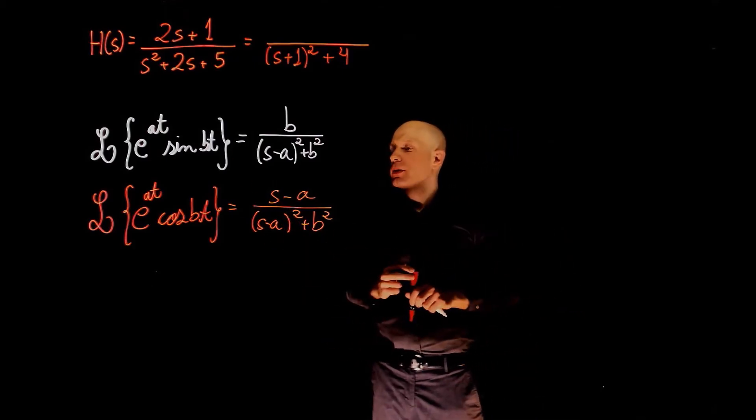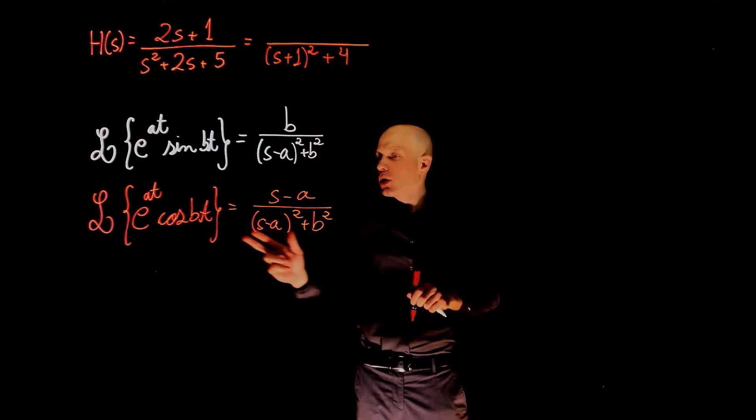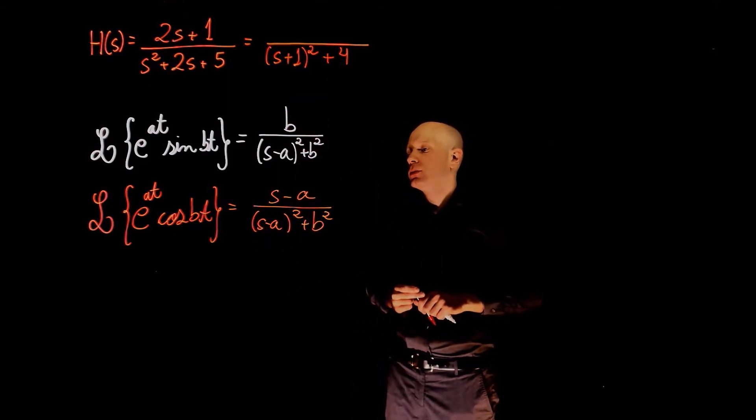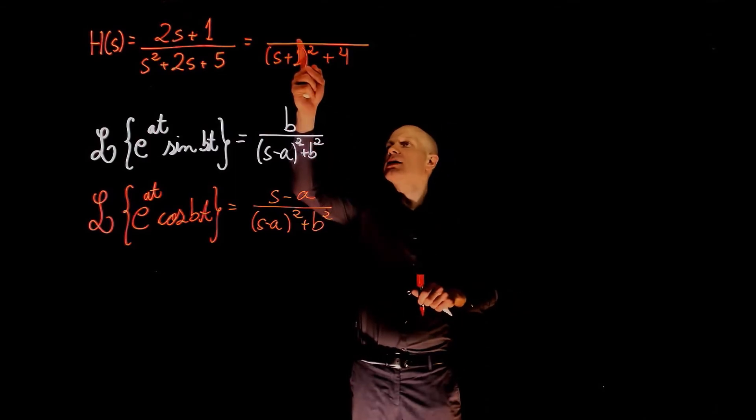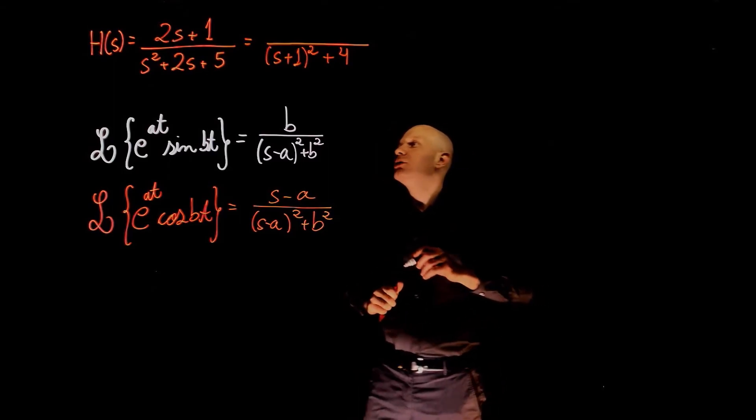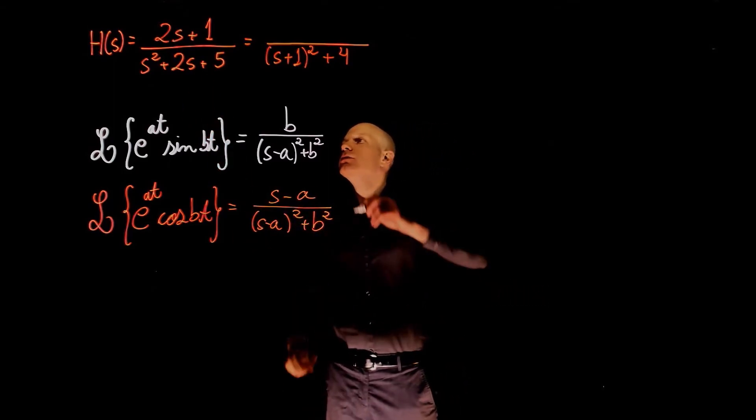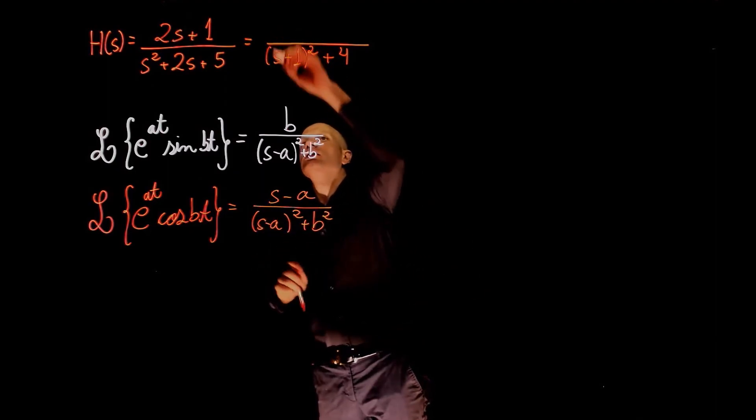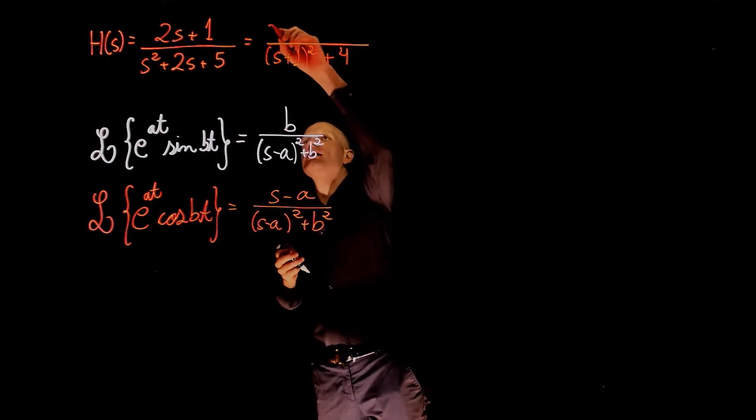Now, if you look at these two transformations here, the one with a cosine requires the same term to appear in the numerator, which means that we need to make s plus 1 in the numerator. What we can do here is to factor out 2, because here we need s that is multiplied by 1.